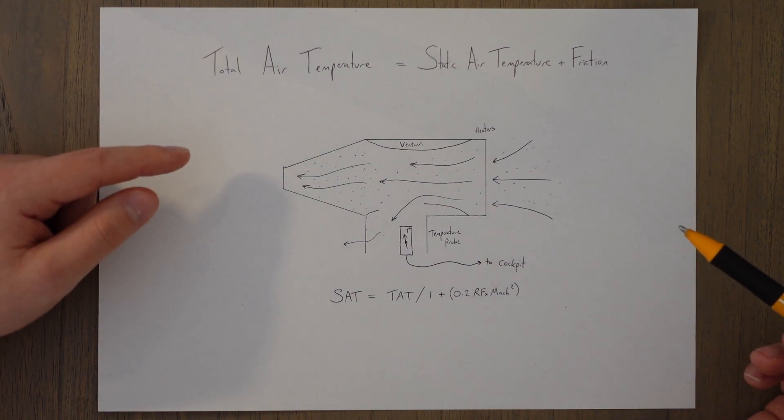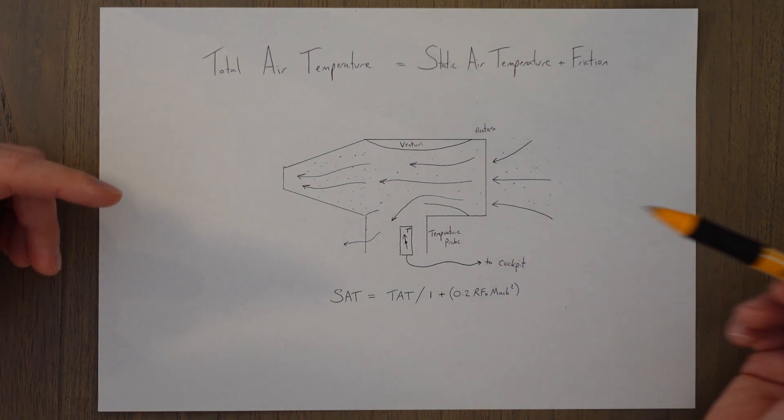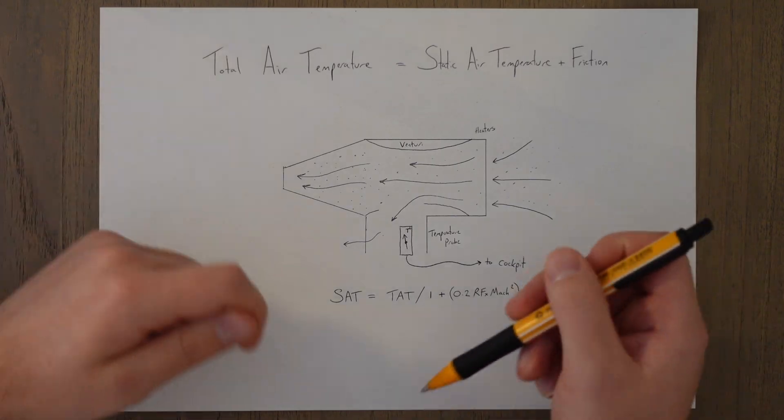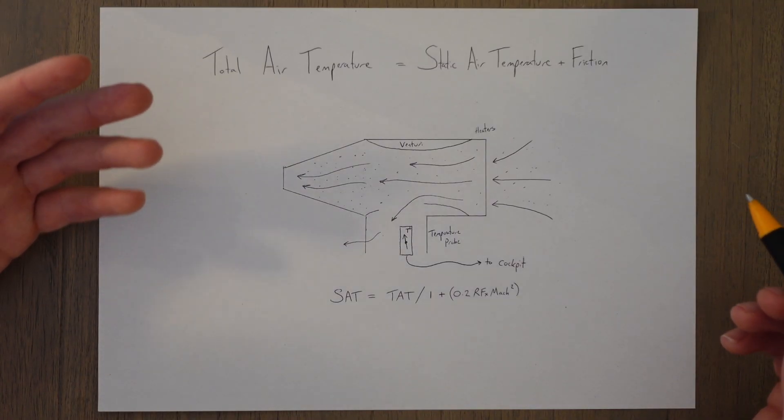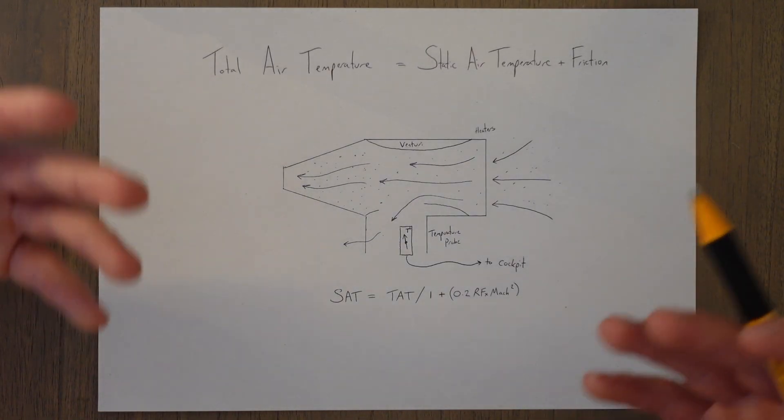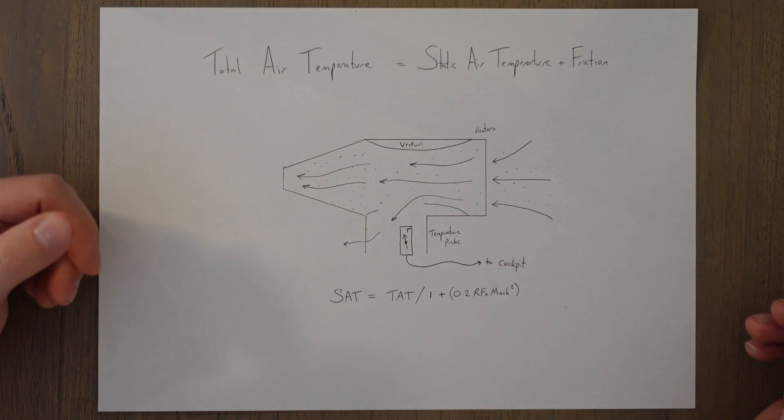Basically, as all the little particles in the air pass over the probe, they rub against it and create friction, causing the probe to heat up. This distorts the results and doesn't give us a true reading because we get this sort of kinetic heating effect whilst we're travelling through the air.